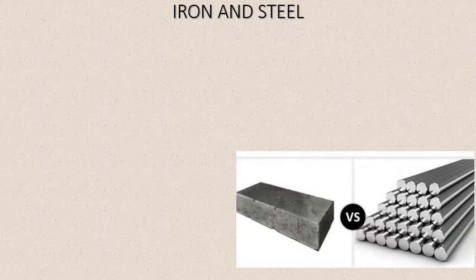Iron and steel — we hear about both a lot, but are they the same? No, there's a huge difference. We take out iron, but when we convert it into steel we are not keeping it as iron. The picture on the left indicates iron and the picture on the right indicates steel bars. You can see the difference: one is glossy, one is lighter, one is harder and dark.